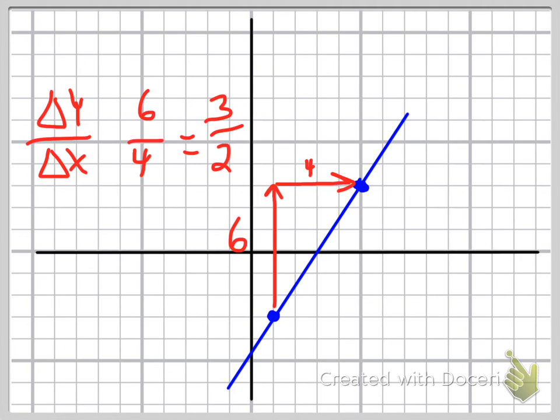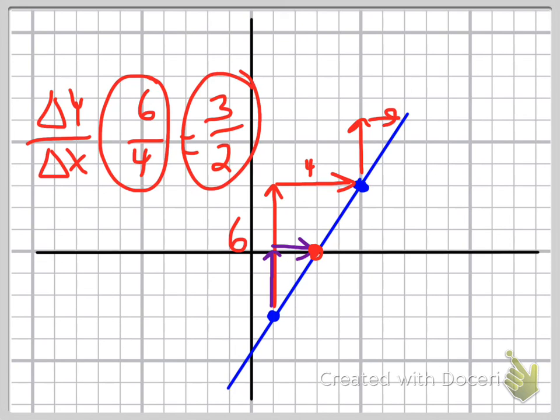if I look at a slope triangle of up three to the right two, it also goes through that point. So that's why the slope triangle of six over four can also be the same thing as three over two. Thank you.